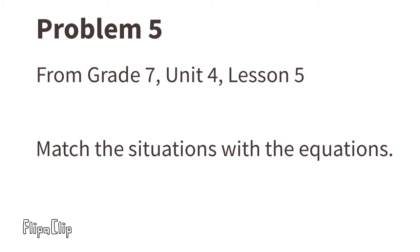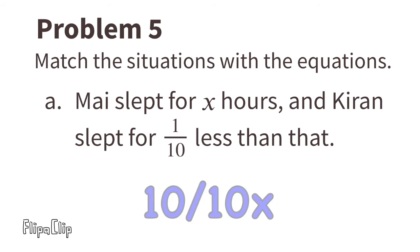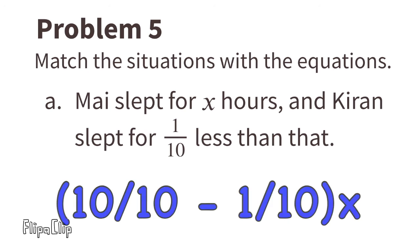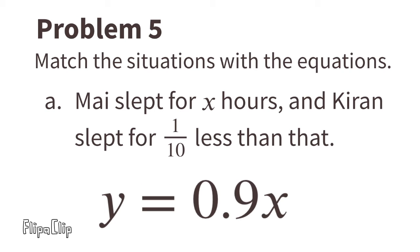Problem number five from seventh grade Unit 4, Lesson 5: match the situations with the equations. Situation A: Mai slept for x hours and Kieran slept for one tenth less than that. We can think of x hours as one x, or ten tenths x. One tenth less than ten tenths is nine tenths, so the matching equation is y equals nine tenths x.